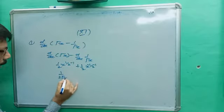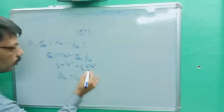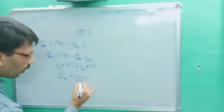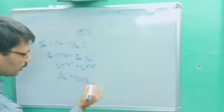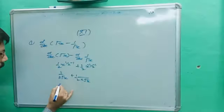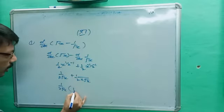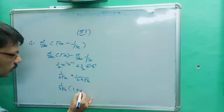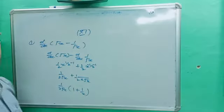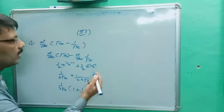So we get 1 upon 2 root x plus 1 upon 2 x^(3/2), which can be written as x root x. Taking 1 upon 2 root x as common, we get 1 plus 1 upon x. This is the answer for the first question.